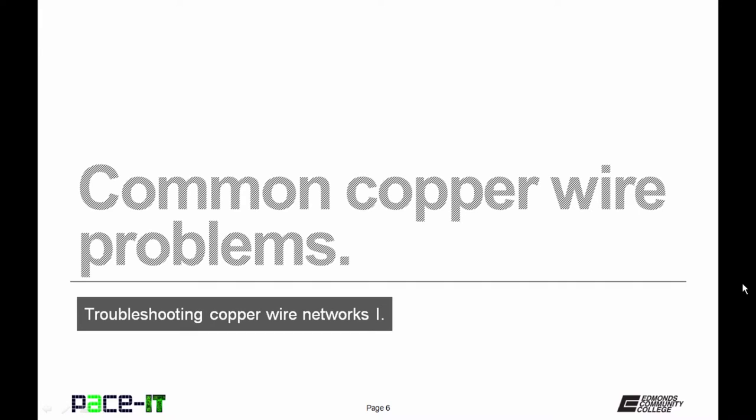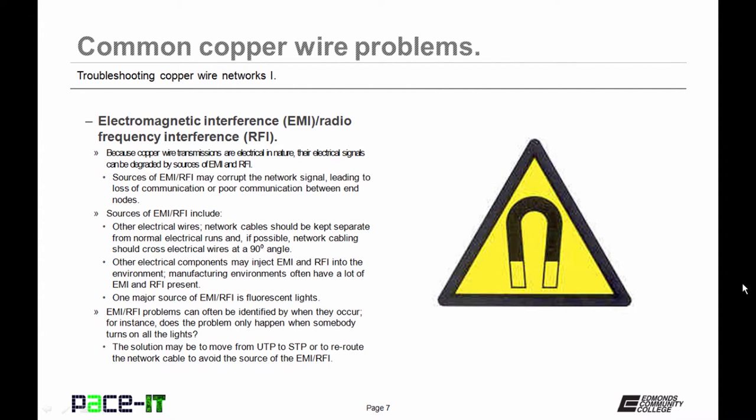With that let's move on to common copper wire problems. First up is electromagnetic interference or EMI and radio frequency interference or RFI. Because copper wire transmissions are electrical in nature, their electrical signals can degrade by sources of either EMI or RFI. Sources of interference may corrupt the network signal leading to a loss of communication or poor communication between end nodes. There are several possible sources of EMI and RFI.